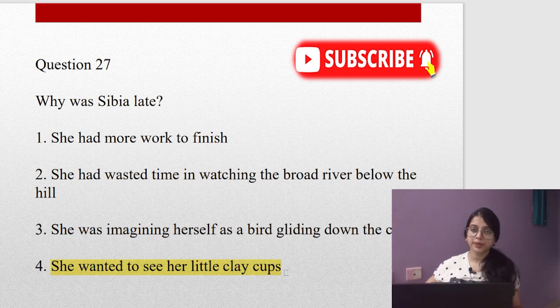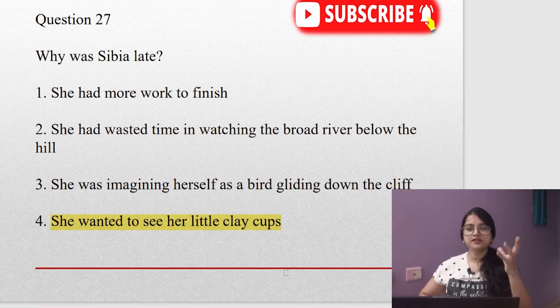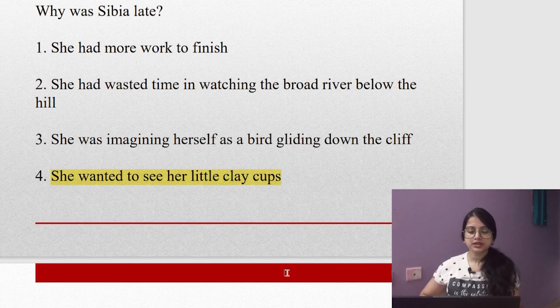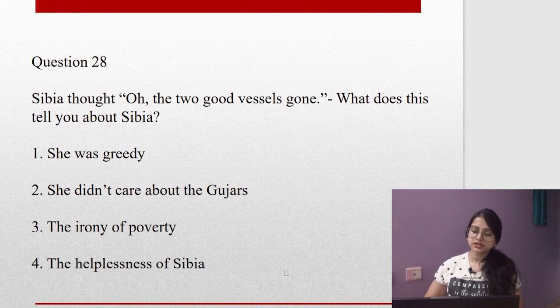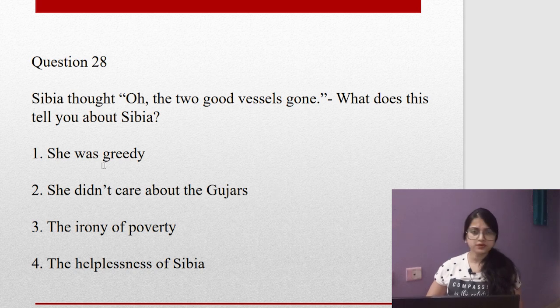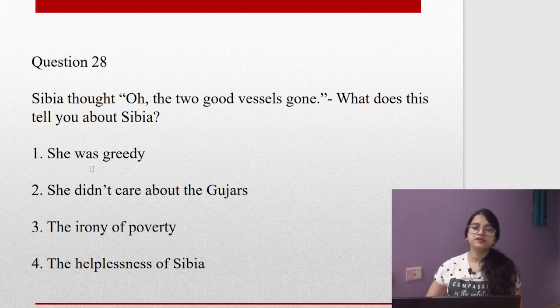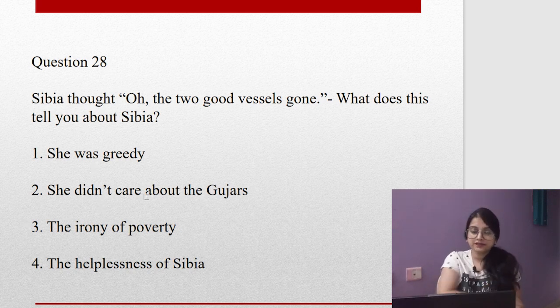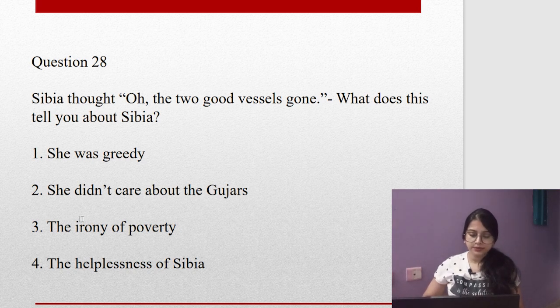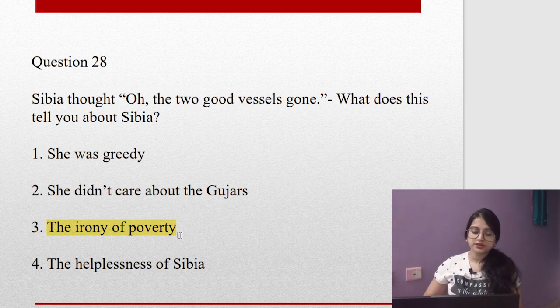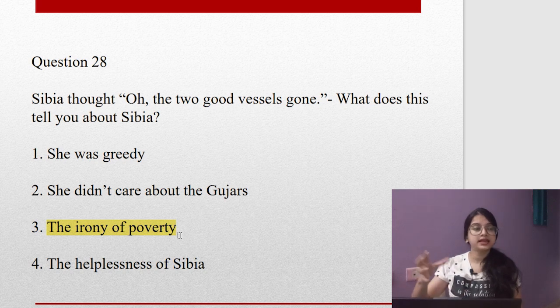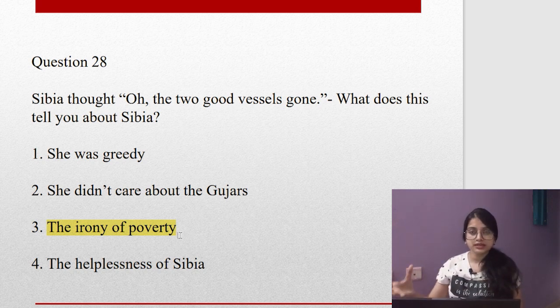Question twenty-eight: Sibia thought, oh, the two good vessels gone. What does this tell you about Sibia? She was greedy? No, she was not greedy, otherwise she would not have helped the Gujar. She did not care about the Gujar? No, she cared. She tried to help her out, taking life risk. The irony of poverty? Yes, this one can be correct. The helplessness of Sibia? Sibia was not helpless. She tried to save whatever she could do. So it is the irony of poverty.